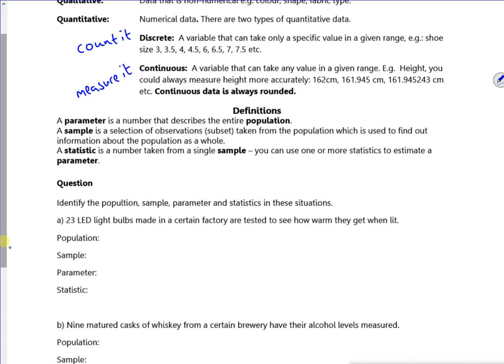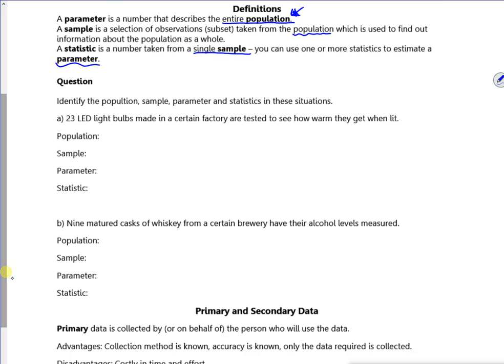We've got some more definitions. The parameter describes the entire population. A sample is a selection of observations taken from the population. The statistic is a number taken from a single sample. It says here you can use one or more statistics to estimate the parameter.